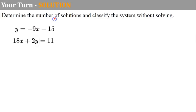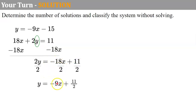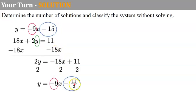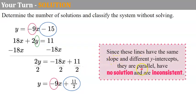Welcome back. The first equation is already in slope-intercept form. For the second equation in standard form, I subtract 18x from each side, giving 2y equals negative 18x plus 11, then divide each term by 2: y equals negative 9x plus 11/2. Comparing the two equations, the slopes are the same and the y-intercepts are different. Same slope, different y-intercept means the lines are parallel, no solution, and the system is inconsistent.